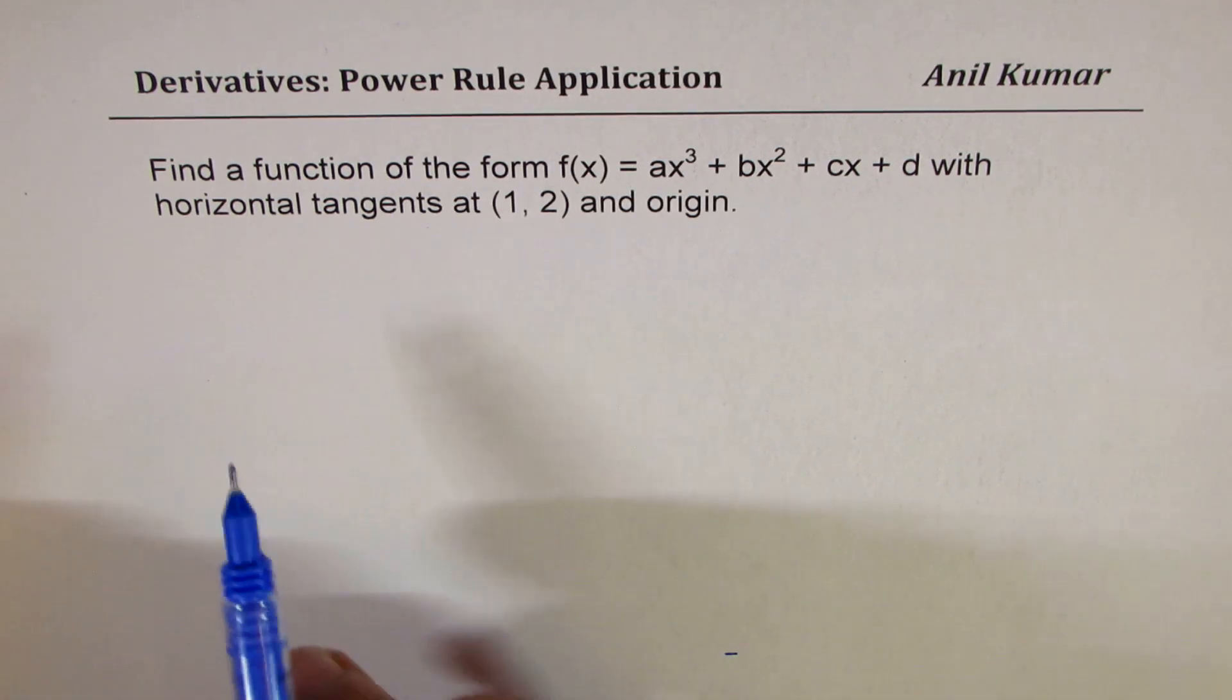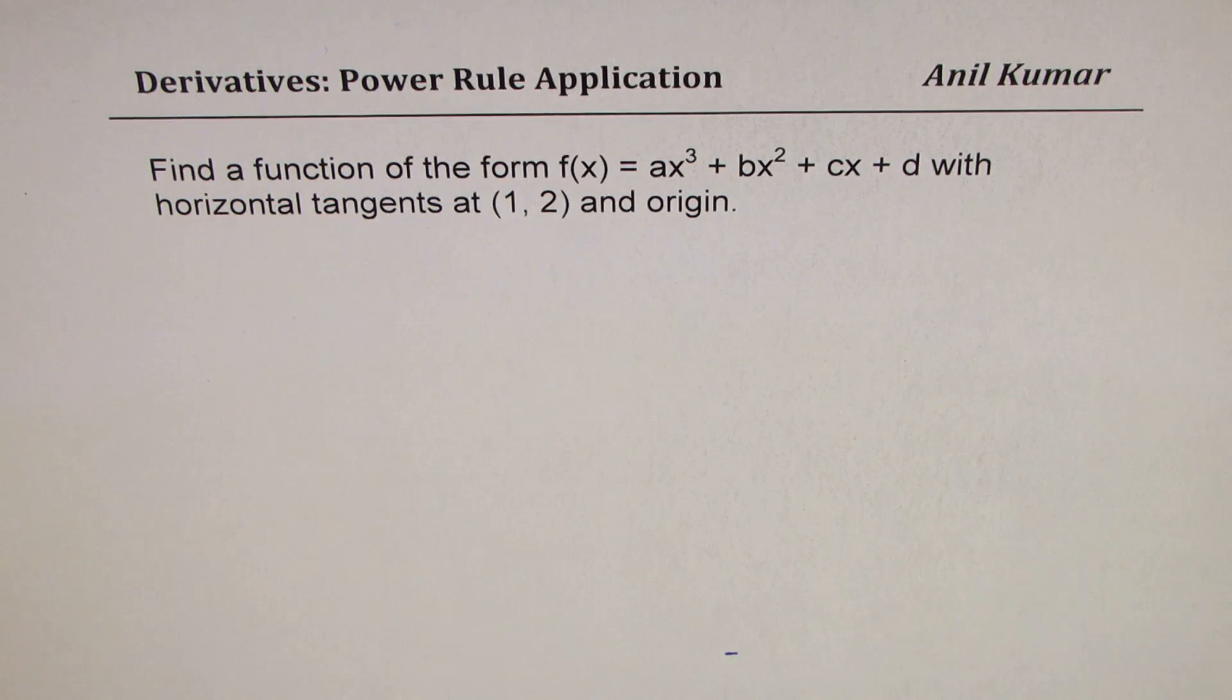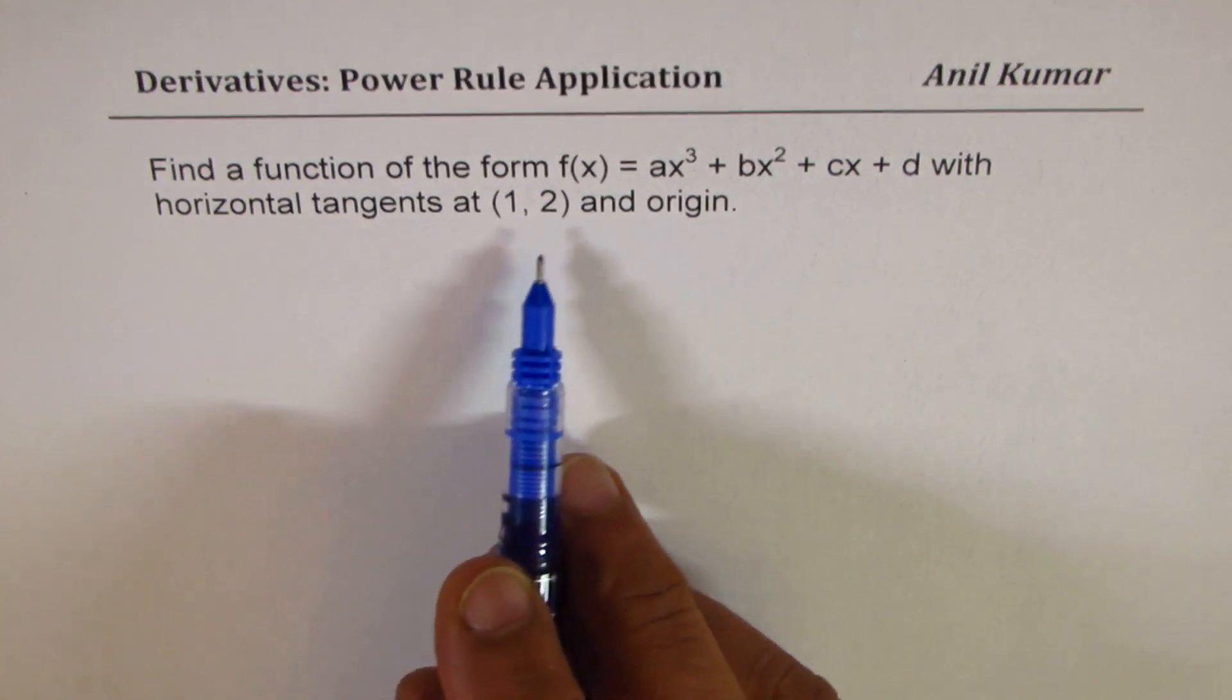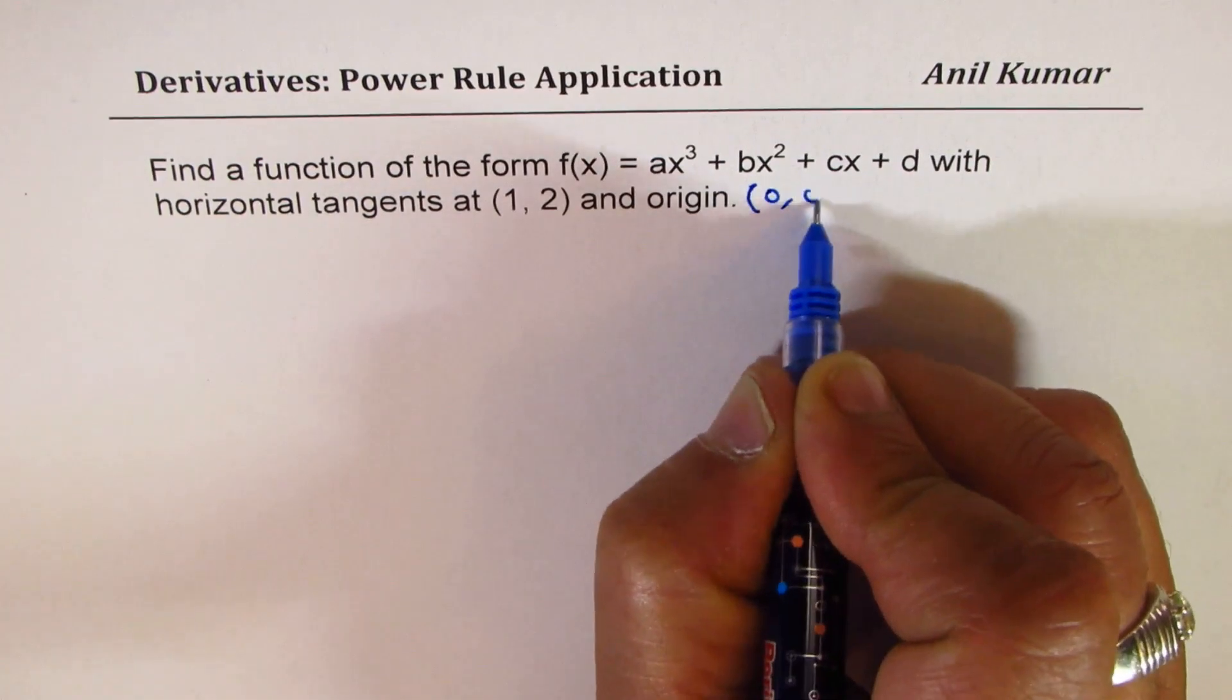The question here is find a function of the form f(x) equals ax cubed plus bx squared plus cx plus d with horizontal tangent at (1, 2) and origin. So when we say origin, we mean (0, 0).